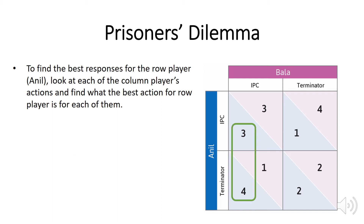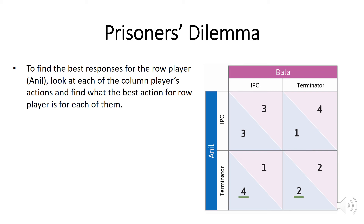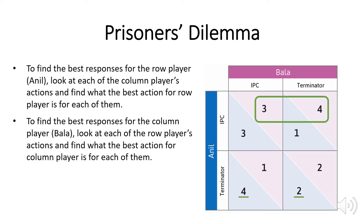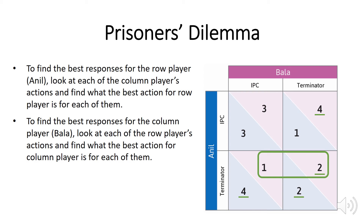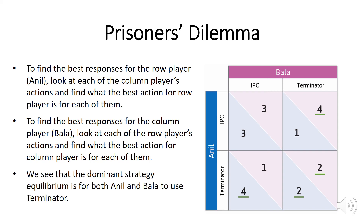Starting with Anil again, we see that if Bala plays IPC, Anil prefers to play Terminator. If Bala plays Terminator, Anil also prefers to play Terminator. And if Anil prefers to play Terminator, Bala also prefers to play Terminator. So both of them have dominant strategies again. But in this case, the dominant strategies lead to an equilibrium in which each of them gets 2.